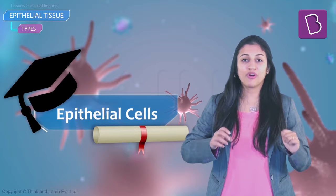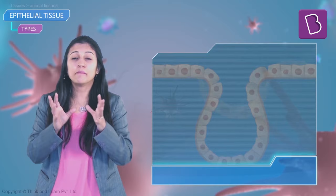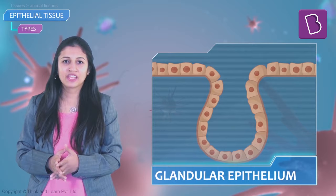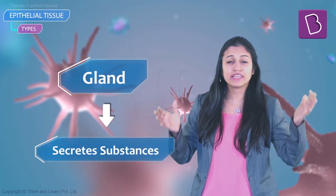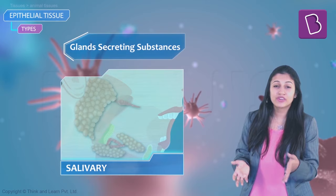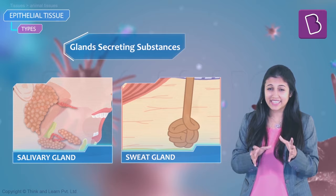Epithelial cells can also specialize to form glands. When a portion of epithelial tissue folds inward, a multicellular gland is formed — this is glandular epithelium. A gland is an organ that secretes substances either retained inside the body or secreted outside, like saliva from salivary glands and sweat from sweat glands.